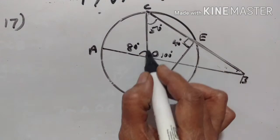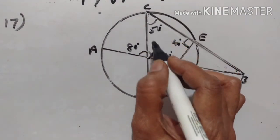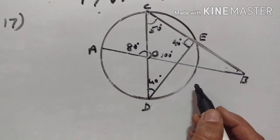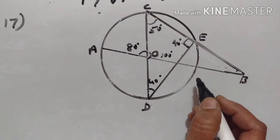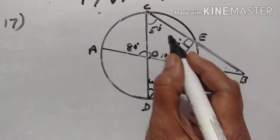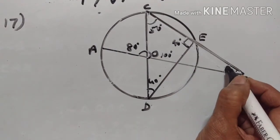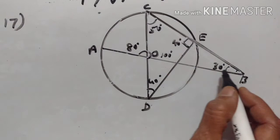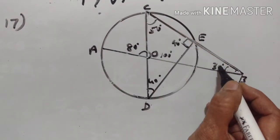In triangle COB, angle OCB plus angle COB plus angle OBC is equal to 180 degrees. 100 plus 50 equals 150, so 180 minus 150 gives angle OBC equal to 30 degrees. Therefore angle ABC is equal to 30 degrees.